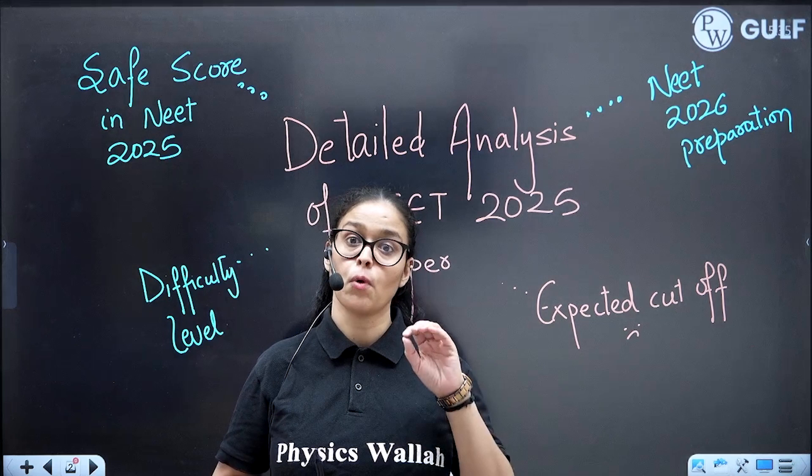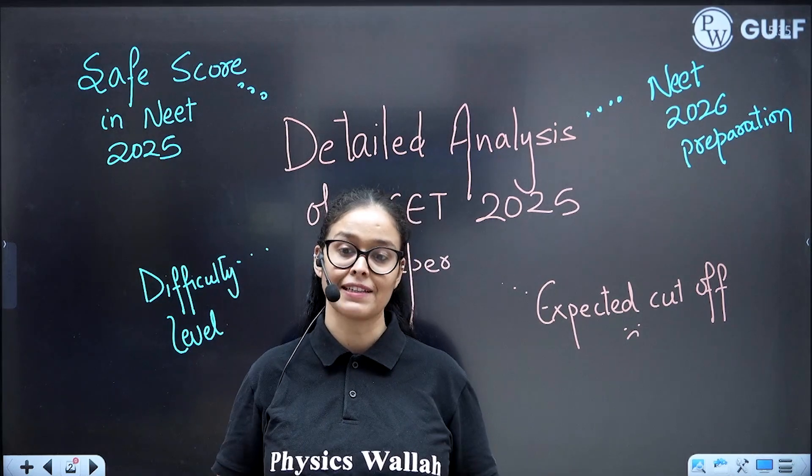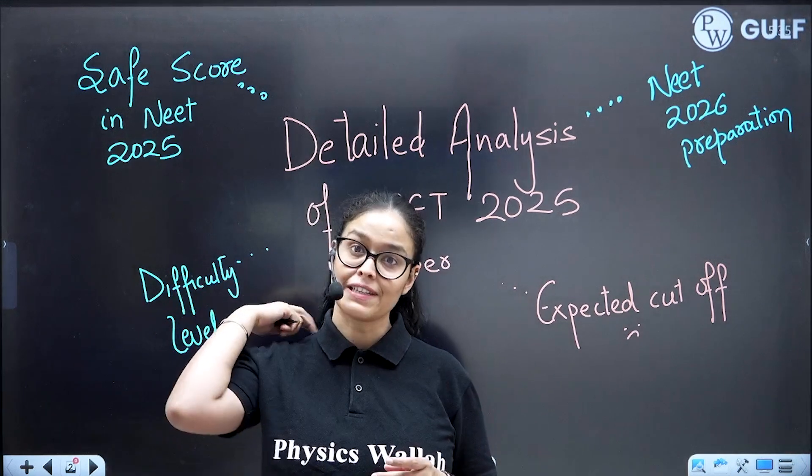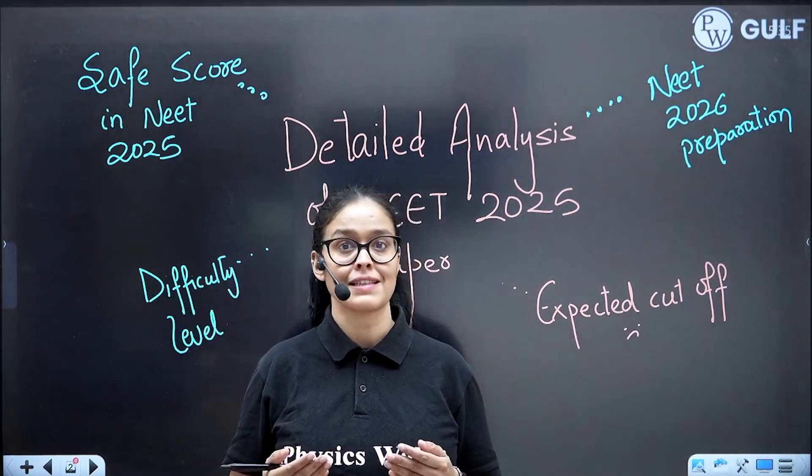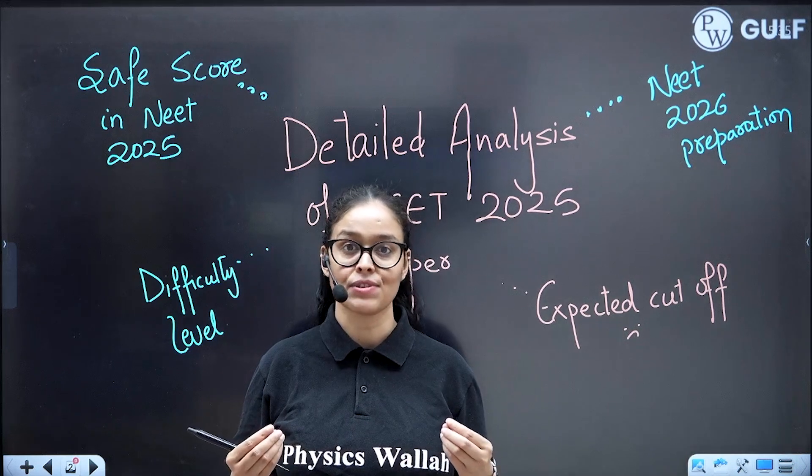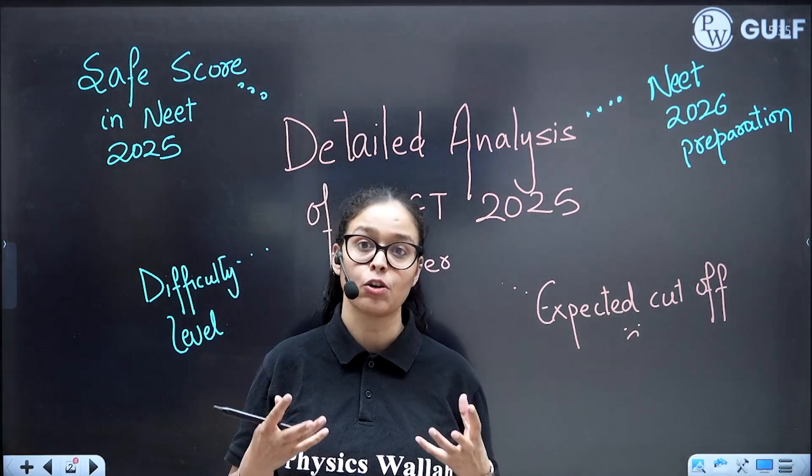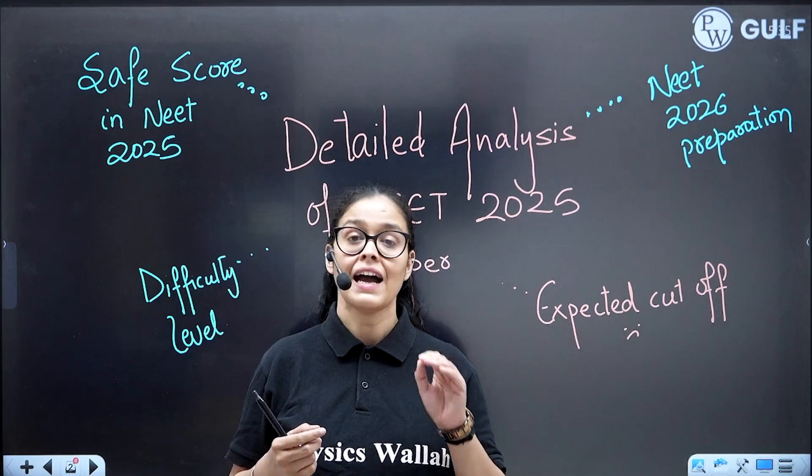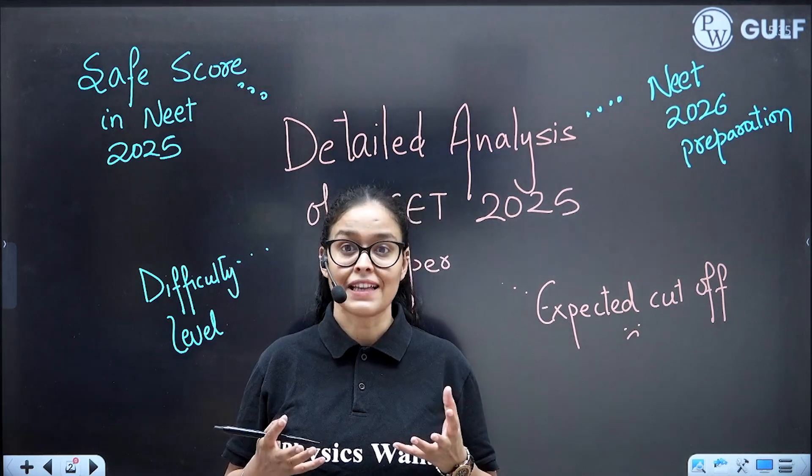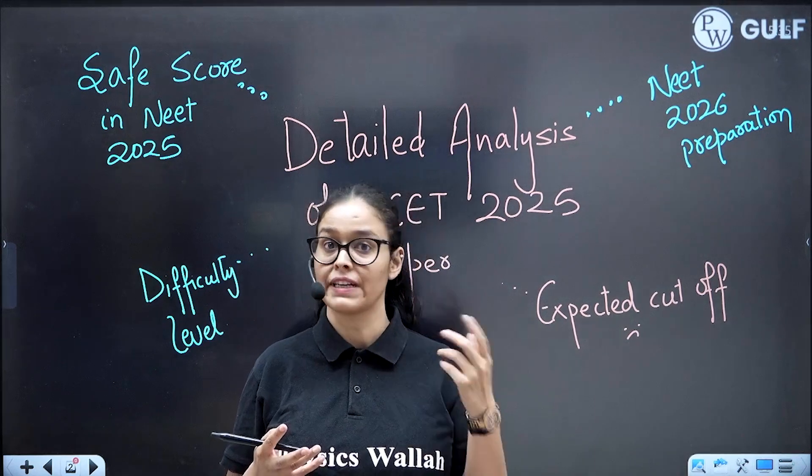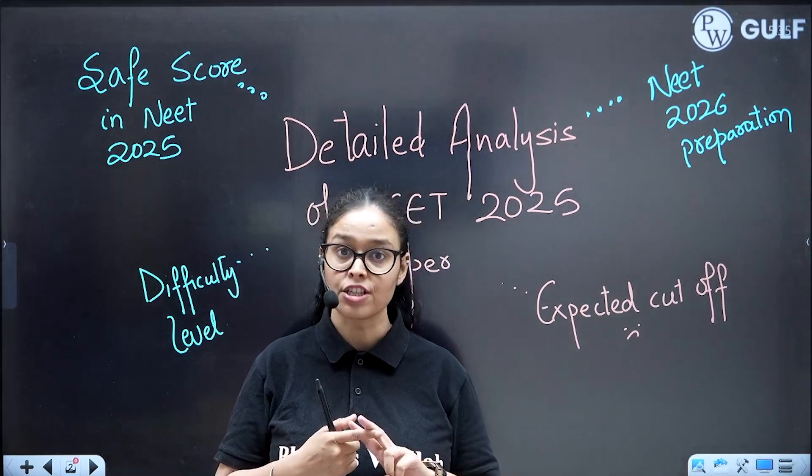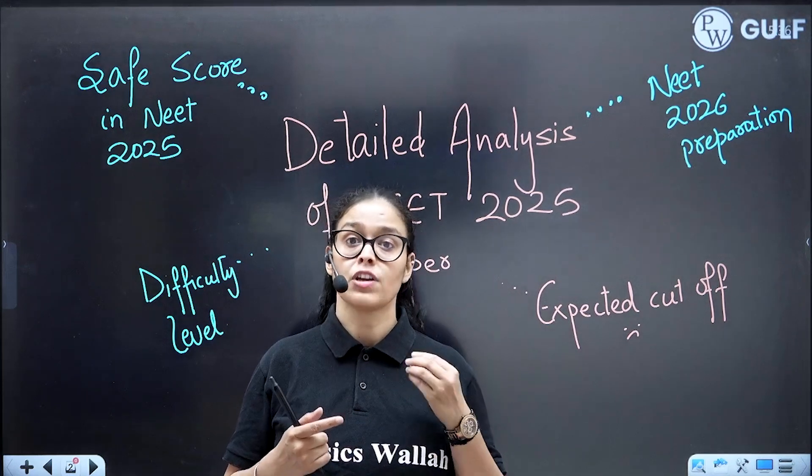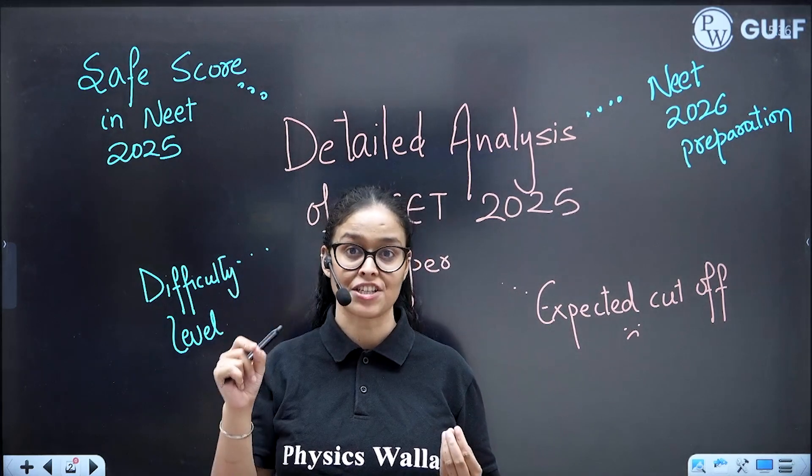This year the paper was so unexpected and the difficulty level was moderate to difficult. Physics was difficult and biology was moderate with application-based questions. Only when you're reading NCERT lines without understanding the concepts of each line, you cannot score good marks. This is high time to see if NCERT lines are enough or if reading them without solving questions or going beyond NCERT to understand concepts will fetch you good marks.